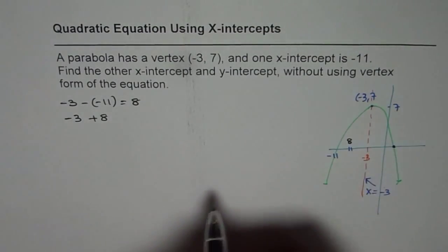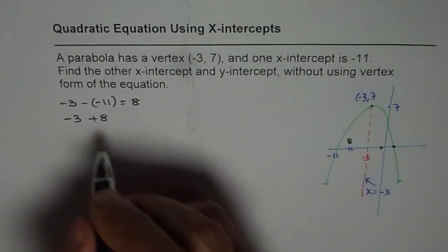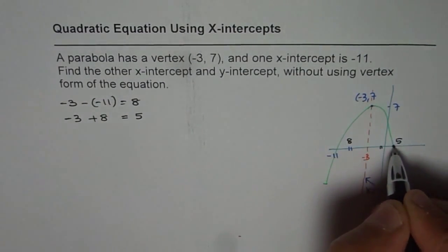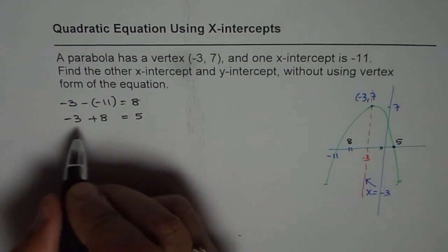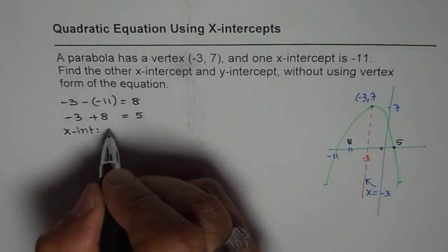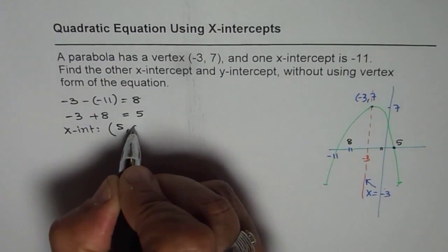So if I do -3 plus 8, I will get the next point, which is same distance away. So -3 plus 8 is 5 and therefore the other x-intercept is at 5, correct? So we have x-intercept at (5, 0), correct?